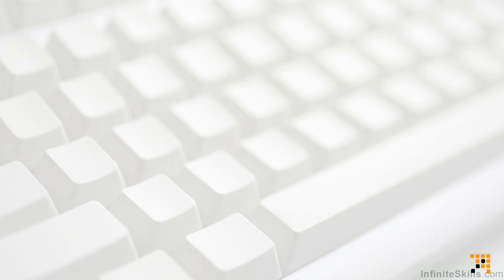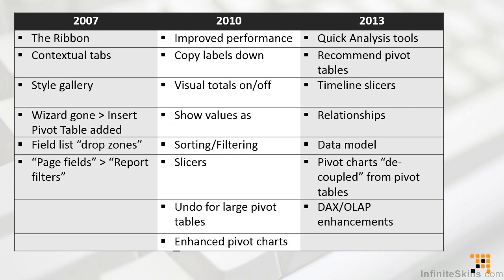Let's get started with the dramatic changes that occurred with 2007, and then move onward. Of course, 2007 for a lot of Office was the introduction of the ribbon. Menus and toolbars that we had all known for what seemed like forever were gone. This also included the addition of contextual tabs. Pivot tables have contextual tabs that let us work with the design and formatting of them. Part of that was also the introduction of something called a theme, and pivot tables can use style galleries so that formatting them can be simply a matter of one or two clicks.